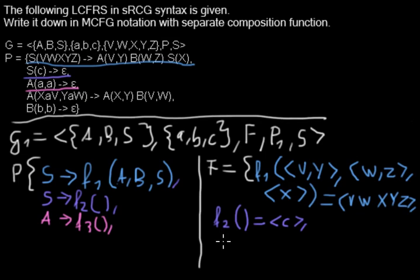Then on the right-hand side, I'm quickly running out of space, I'm writing this here: f3, it doesn't need any arguments and it returns the tuple here which is here on the left-hand side, so it's epsilon, epsilon.